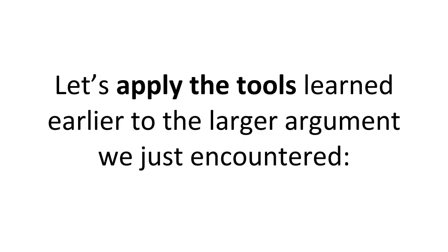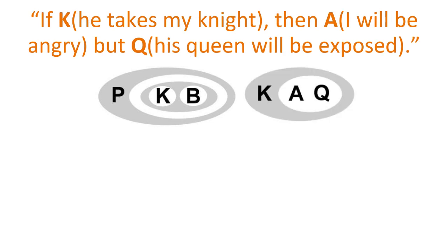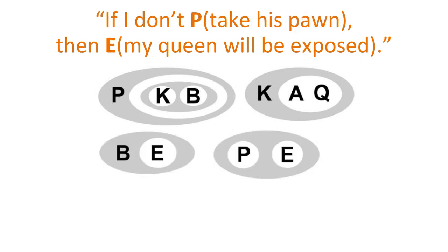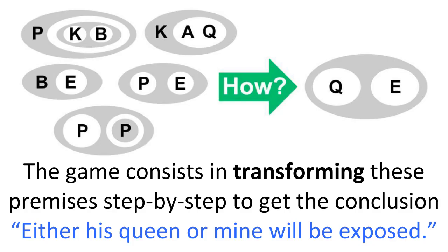Let's apply the tools learned earlier to a larger argument. If I take his pawn, then he will take my knight or he will move his bishop. If he takes my knight, then I will be angry but his queen will be exposed. If he moves his bishop, then my queen will be exposed. If I don't take his pawn, then my queen will be exposed. I am going to take his pawn, or I am not going to take it. The game consists in transforming these premises step by step to get the conclusion: either his queen or mine will be exposed. Game on!